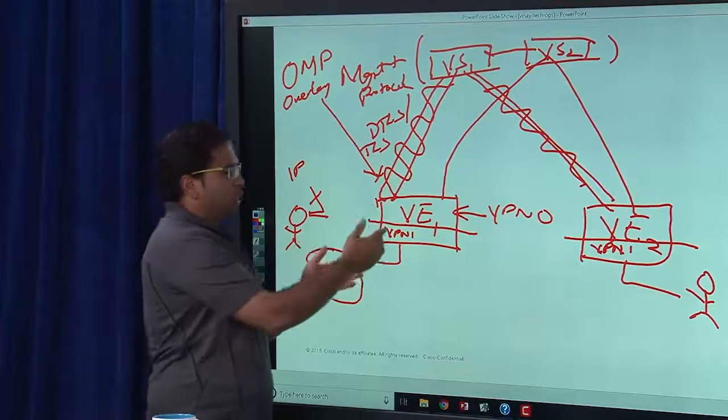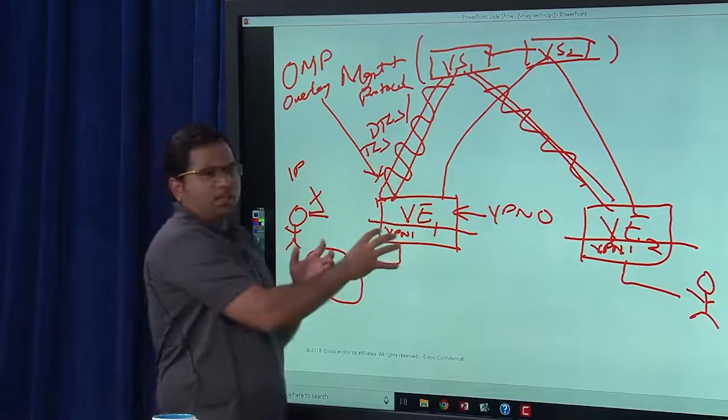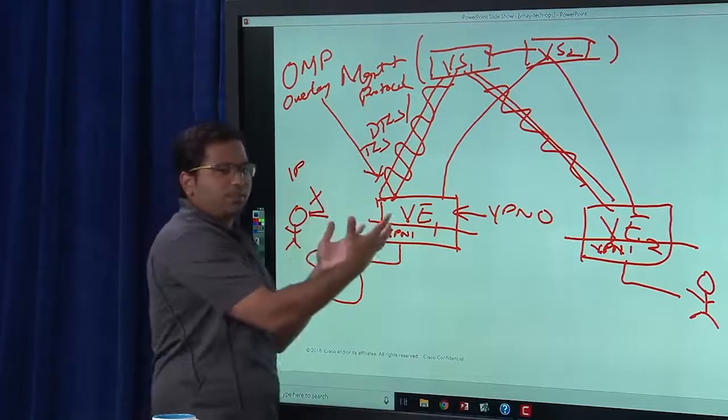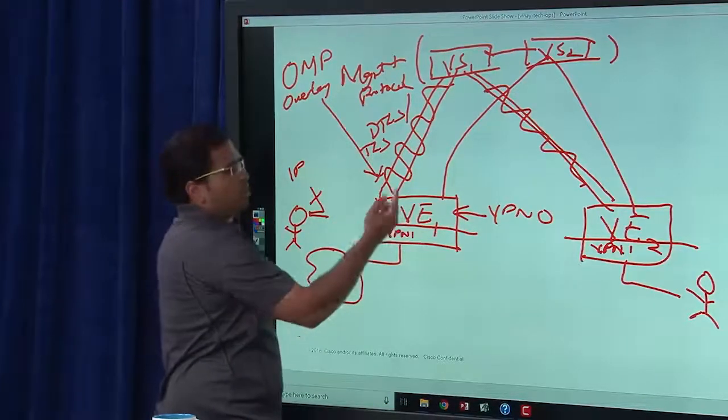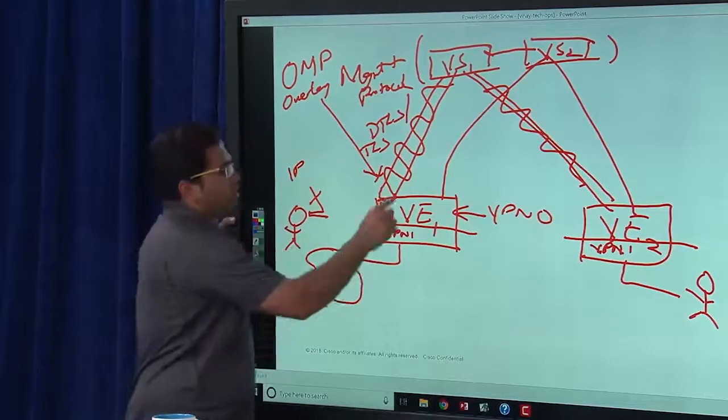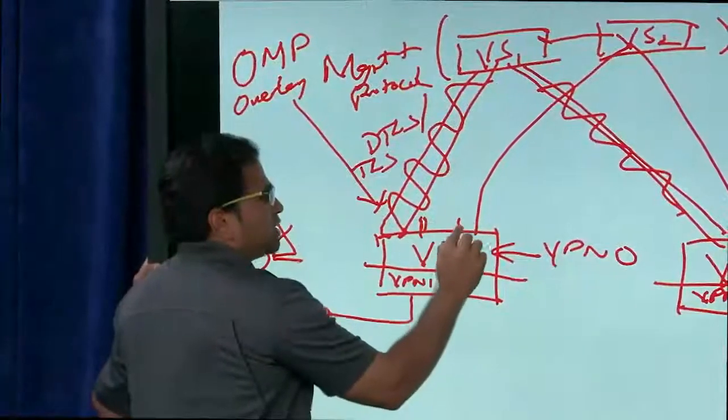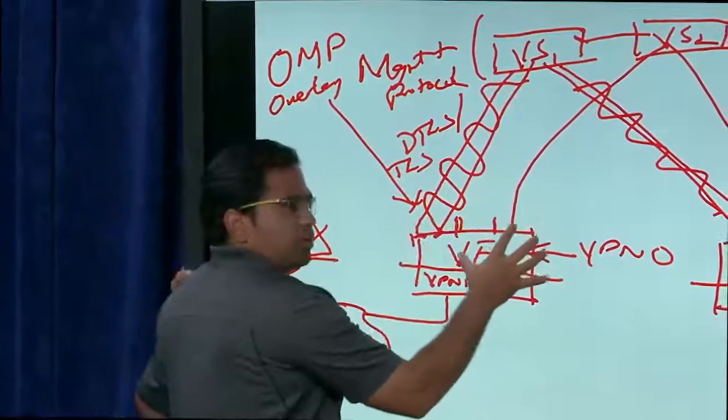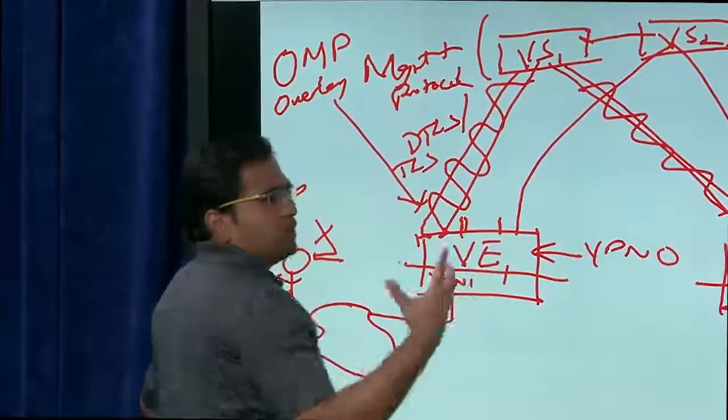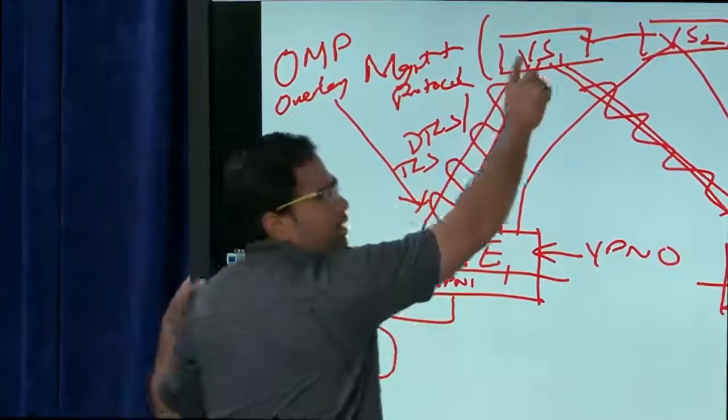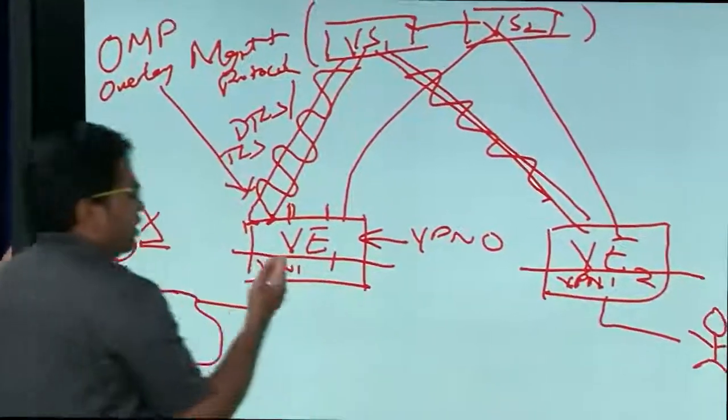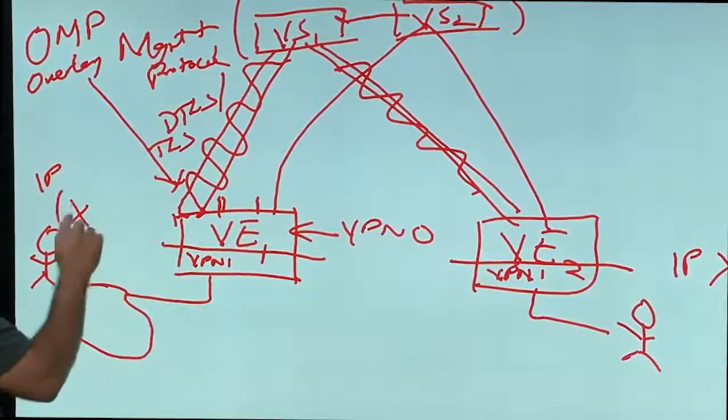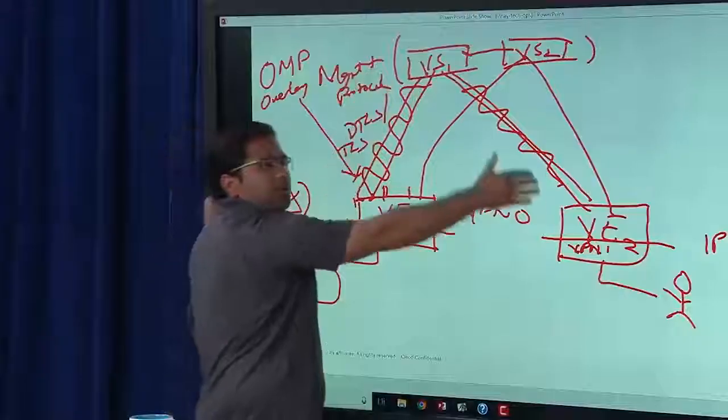So it really doesn't matter. So VPN 1, the view of OMP is the same as VPN 0. For VPN 0, the only routes that it has or the major routes it has consists of the TLOCs themselves. So VPN 0 is telling OMP, hey, I have these routes which are the TLOCs. Please propagate them down to the far end. VPN 1 is subscribed to OMP as well. So it's letting OMP know, hey, I have this route X. Please propagate it to the far end.